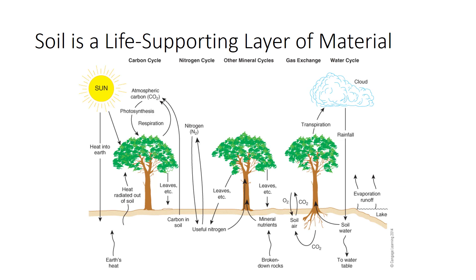Soil is a thin interface between the atmosphere at 22 miles deep and the rocky, solid surface of the continental crust about 50 miles thick. The atmosphere, crust, and soil interact to provide plants and animals with the resources they need. Living things need proper temperature, oxygen, water, carbon, and other nutrients.